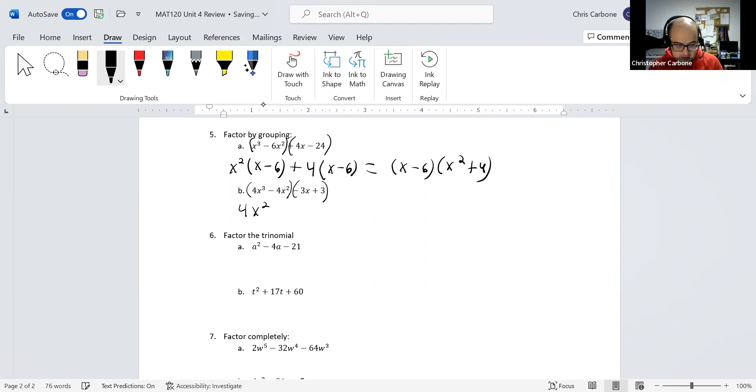Minus 3 times x minus 1, for factoring out the negative 3 from those two.